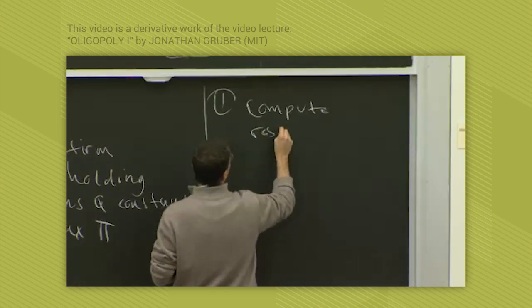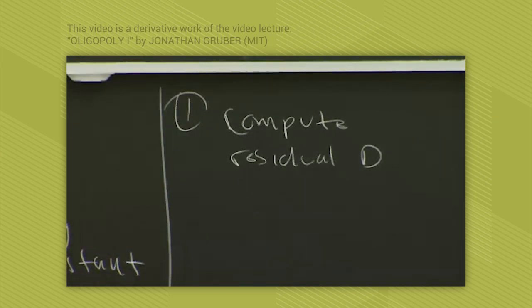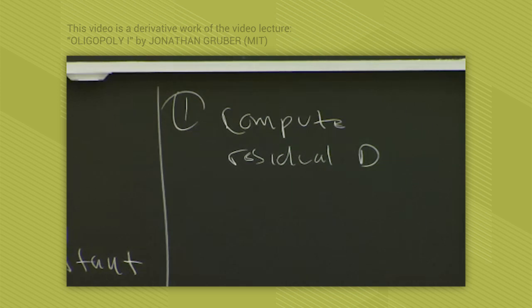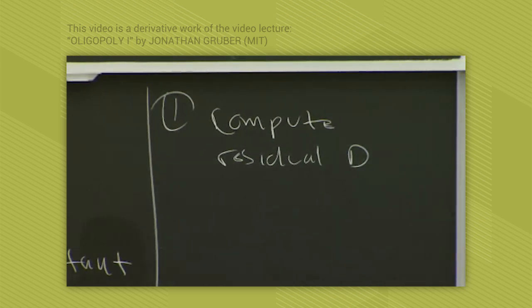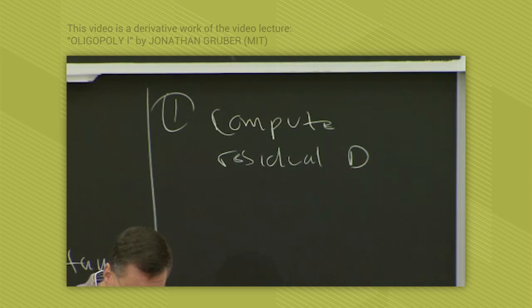We talked about residual demand curves earlier. That's the demand for my firm given the quantity absorbed by other firms in the market. In this case, quantity absorbed by the one other firm in the market, but in general you can do this with multiple players. First you calculate residual demand.